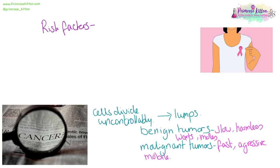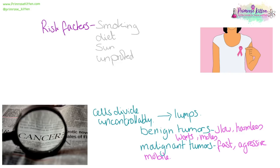There are lots of risk factors for cancer, many of which we can control. Smoking has large implications for lung cancer. A good diet can reduce your risk of bowel cancer, whereas not eating much fruit and vegetables puts your bowel at risk. The amount of time you spend in the sun affects your susceptibility to skin cancer, and unprotected sex can leave you at risk of cervical cancer.